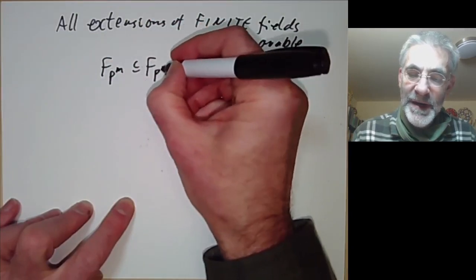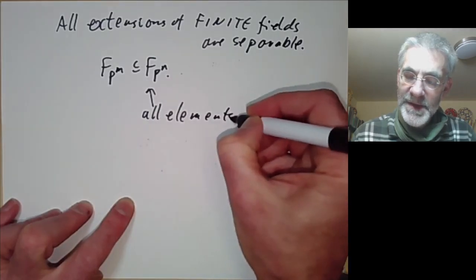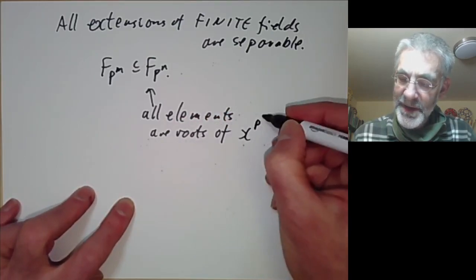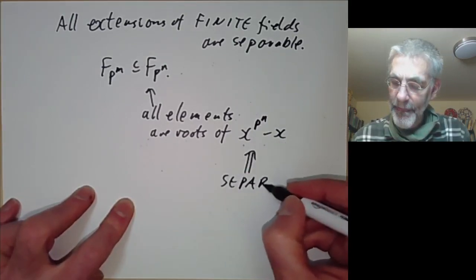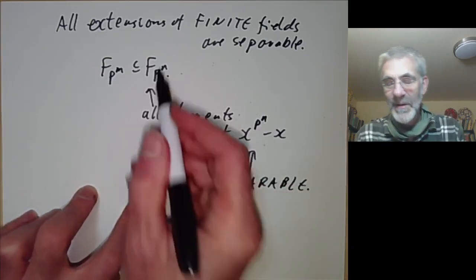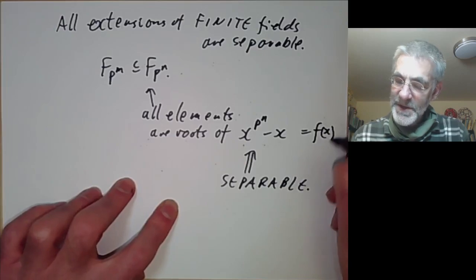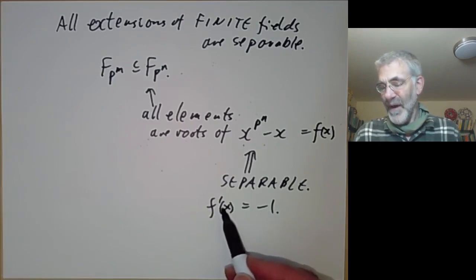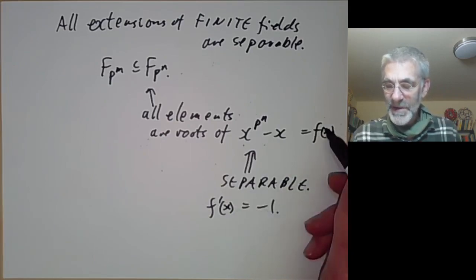This is easy to see: if you have a field F_{p^m} contained in the finite field of order p^n, then all elements are roots of the polynomial x^(p^n) − x. This polynomial is separable — either because it has p^n distinct roots which are the p^n distinct elements of the field, or because its derivative is just −1, so the highest common factor of f and f' is obviously 1. So f and f' are co-prime.